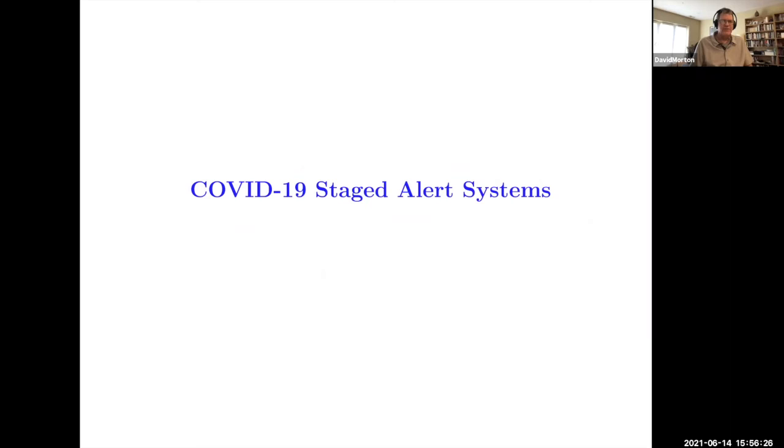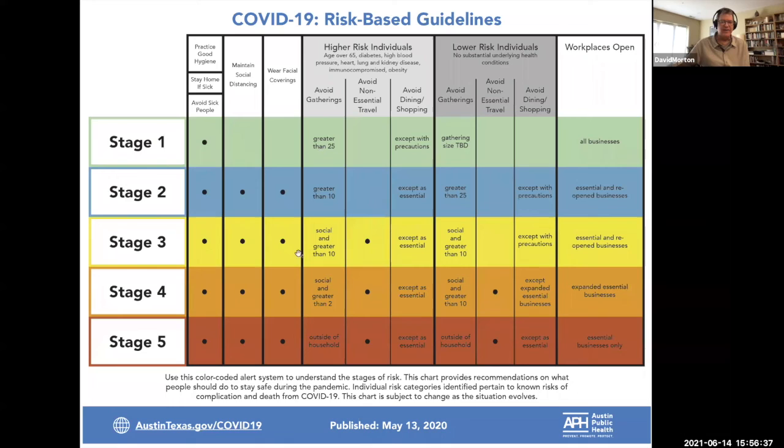I just thought I'd tell you a little bit about some recent work that we've done with the city of Austin, Texas, in terms of staged alert systems for COVID. This is a risk-based guideline that Austin published in the middle of May 2020, where there are five different stages. Stage five is the strictest version of lockdown. Stage one is sort of the completely open normal. There's certain behavior for high-risk people with comorbidities, and there's behavior guidelines for lower-risk individuals, as well as businesses and workplaces as to what they can do.